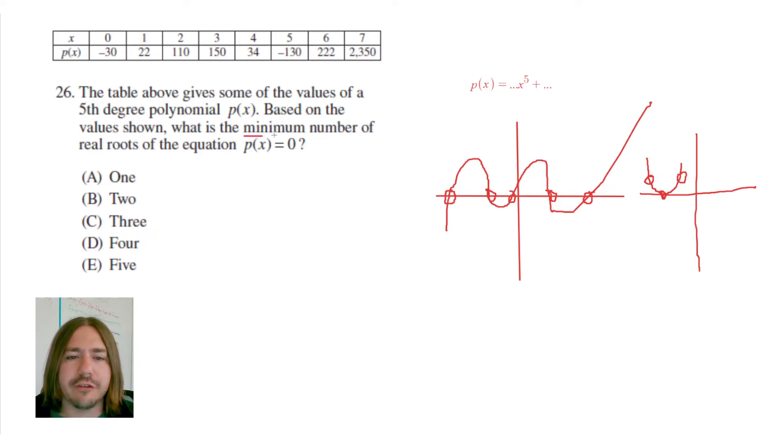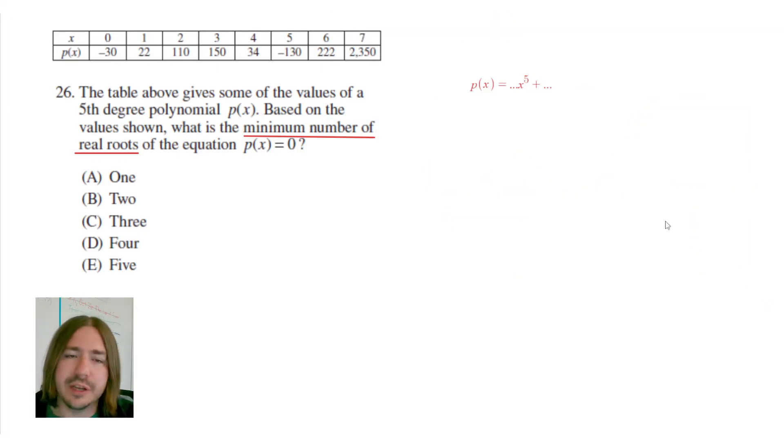So this is asking for the minimum number of real roots. It's like how many roots do there absolutely have to be? And so the way to answer this question is just to look at the numbers, and any time you see a sign change, you're going to count that there has to be a root there.